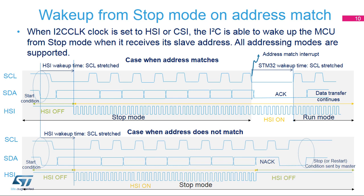When the device is in stop mode, the high-speed internal oscillator is switched off. When a start condition is detected, the I2C peripheral enables the high-speed internal oscillator to receive the address on the bus. After an address is received in stop mode, a wake-up interrupt is generated if the address matches the programmed slave address. If the address does not match, the oscillator is switched off, no interrupt is generated, and the device remains in stop mode. Clock stretching must be enabled, as the peripheral stretches the clock line low after the start condition until the oscillator is started and until the STM32MP1 device is awakened.